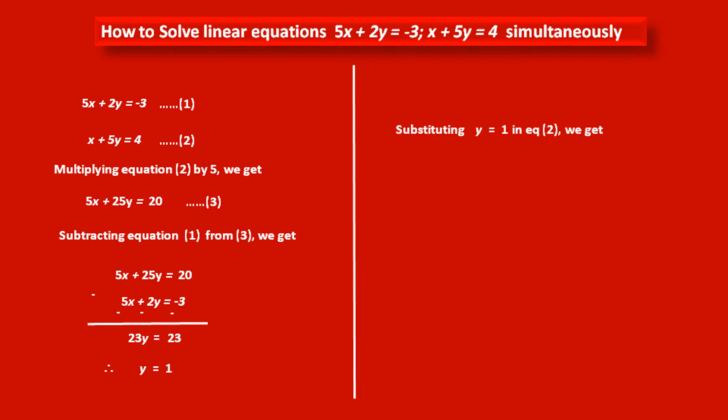Now substituting this value y is equal to 1 in equation 2. We get... Equation 2 is x plus 5y. So at the place of y, we have to put 1. So 5 into 1 is equal to 4.